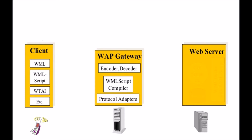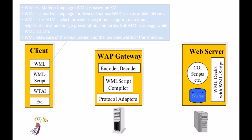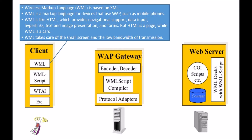The web server contains components like CGI script and WML deck. Now, looking at the client — the first component is WML. WML stands for Wireless Markup Language, which is based on XML — Extensible Markup Language. WML is a markup language for devices that use WAP, such as mobile phones, which use WAP to access the internet.